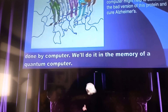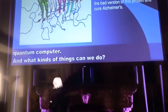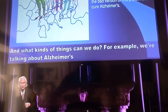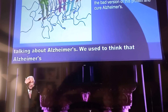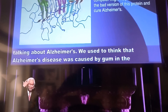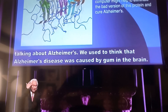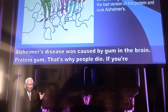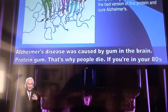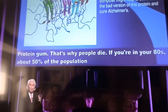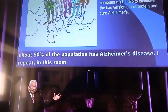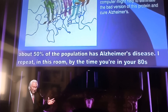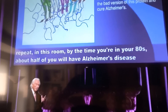And what kinds of things can we do? For example, we're talking about Alzheimer's. We used to think that Alzheimer's disease was caused by gum in the brain, called amyloid protein gum. That's why people die. If you're in your 80s, about 50% of the population has Alzheimer's disease. I repeat — in this room, by the time you're in your 80s, about half of you will have Alzheimer's disease. Think about it for a moment.